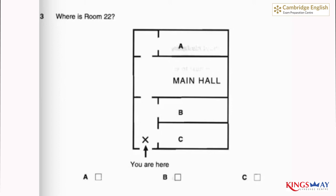Three. Where is room 22? Can you tell me the way to room 22? Well, go straight down here and it's the second door on the right. Do I have to go through the main hall? No, it's the door on the right just before you get to the main hall.